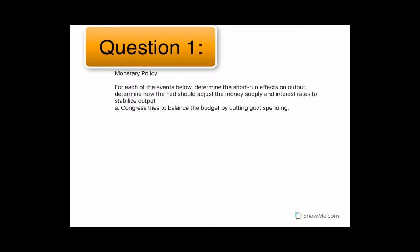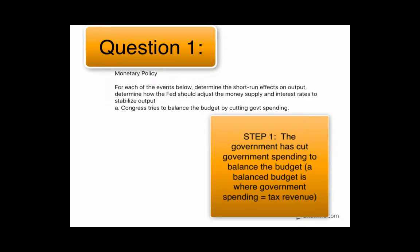So this question says for each of the events below, we'll do them one by one, determine the short-run effects on output and how the Fed should adjust the money supply and interest rates to stabilize output. This says Congress tries to balance the budget by cutting government spending.